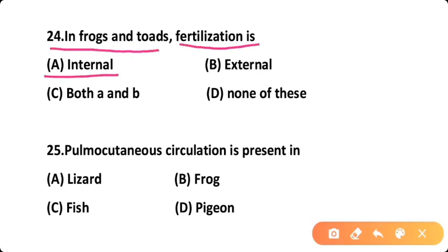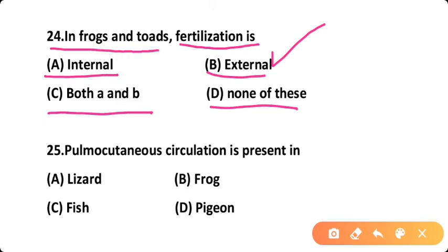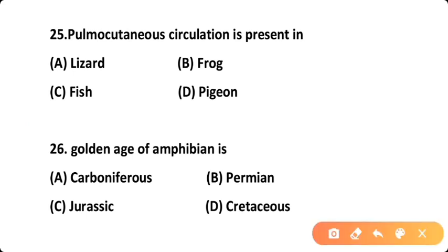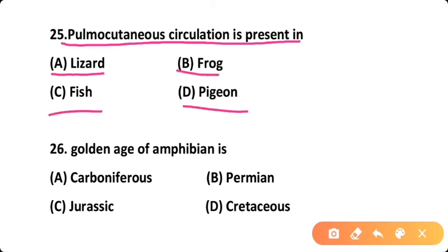Question twenty-four: In frogs and toads the fertilization is — Option A: internal, Option B: external, Option C: both, Option D: none of these. Correct answer is Option B — frogs and toads have external fertilization, meaning they release their eggs and sperm in water. Question twenty-five: Pulmo-cutaneous circulation is present in — Option A: lizard, Option B: frog, Option C: fish, Option D: pigeon. Correct answer is Option B — pulmo-cutaneous circulation is present in frogs, especially in amphibians.